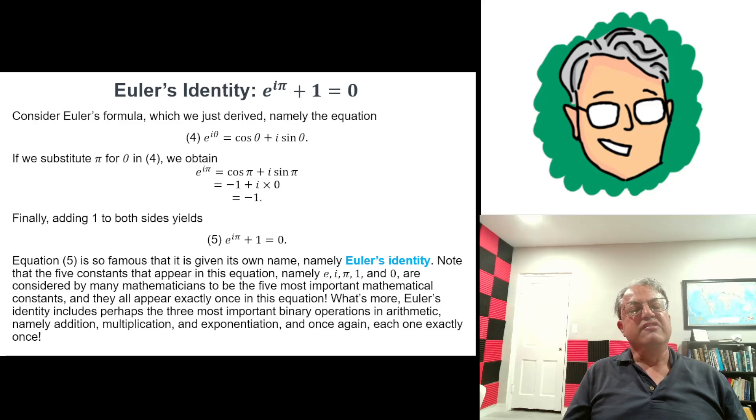I'm going to finish by talking about another related formula, namely Euler's identity, which says e to the iπ plus 1 equals 0. This turns out to be just a special case of Euler's formula. Let's see what happens when we plug in π for θ. We know that e to the iθ is cosine θ plus i sine θ. Let's substitute π for θ. We get e to the iπ equals cosine π plus i sine π.